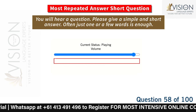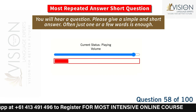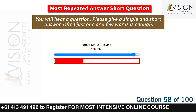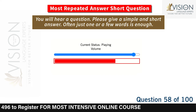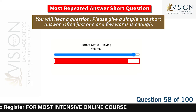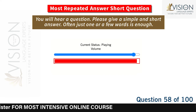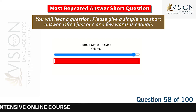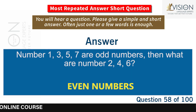Number 1, 3, 5, 7 are odd numbers. Then what are number 2, 4, 6? Even numbers.